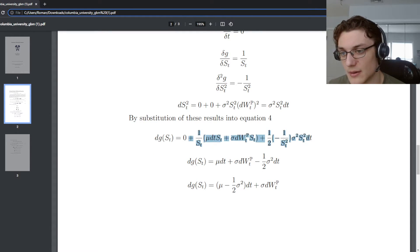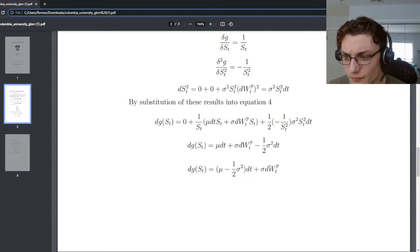We're just distributing the one over S of t and the negative one over S of t squared, and then we get this next line here. Then we can just group and factor out the dt, and we get mu minus one half sigma squared dt plus sigma dW_t under that real world measure.